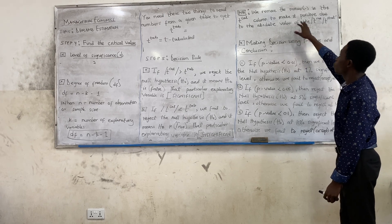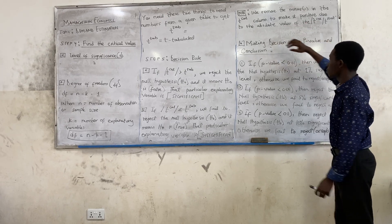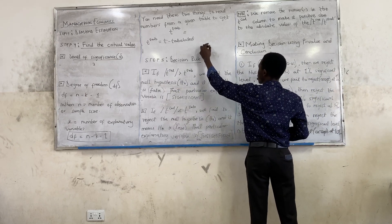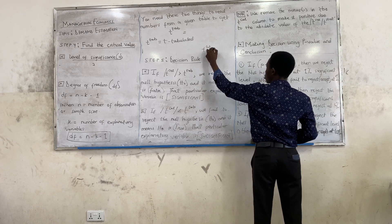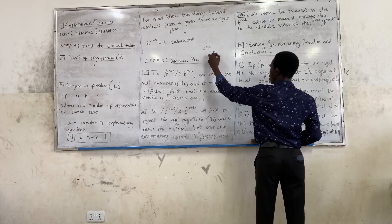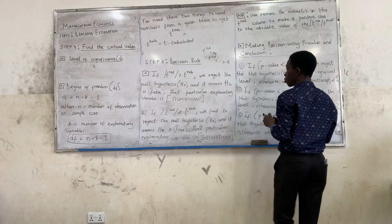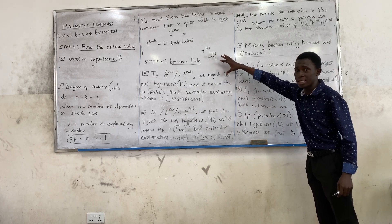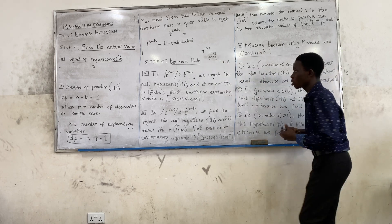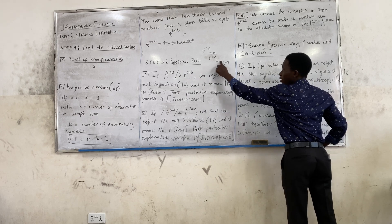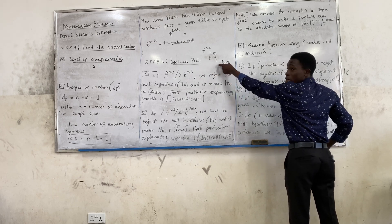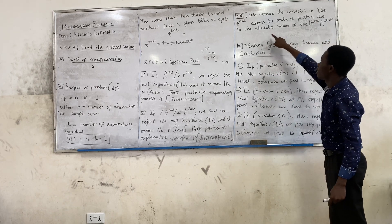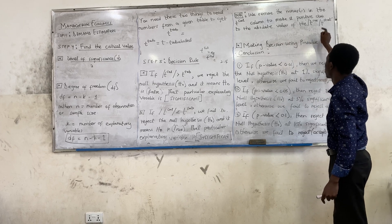There's a note here: we remove the minus in the T-calculated column. If we have a T-calculated of negative 2.4, we take the absolute value. The negative moves out, making it positive. We remove the minus in the T-calculated column to make it positive, due to taking the absolute value of the T-calculated or the T-statistic.